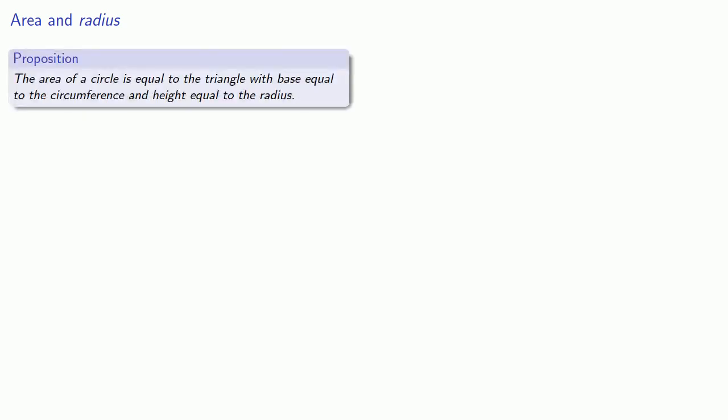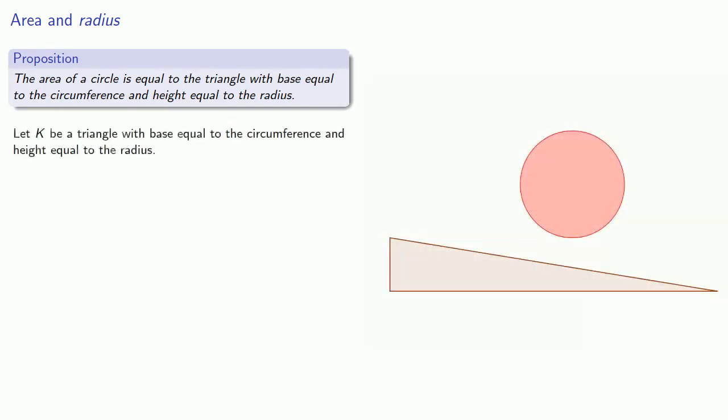So Archimedes proves this by a double proof by contradiction. Let K be a triangle with base equal to the radius. If the area of a circle is not equal to K, it's either greater or less.